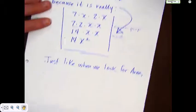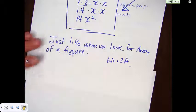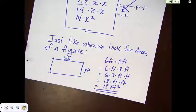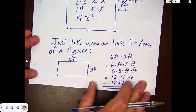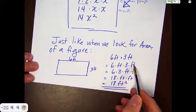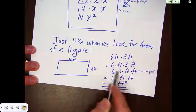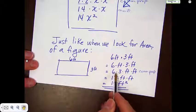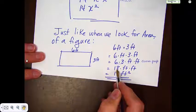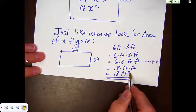Just like when we find the area of a figure, we do something very similar. We have a figure that is 6 feet by 3 feet — that's how we find area. So it's 6 times feet times 3 times feet. Using the commutative property, we get 6 times 3 times feet times feet. 6 times 3 is 18, and feet times feet is feet squared, so we get 18 feet squared. That explains why area uses squared units.